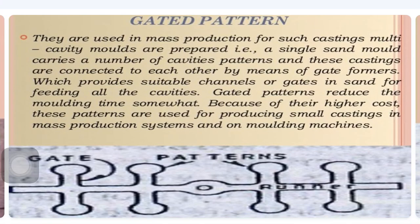Next is the gated pattern. Gated patterns are used in mass production for castings where multi-cavity molds are prepared. A single sand mold carries a number of cavities, and these castings are connected to each other by means of gate formers, which provide suitable channels or gates in the sand for feeding all the cavities. A gated pattern reduces molding time, and despite their higher cost, they are used for producing small castings in a mass production system on molding machines.